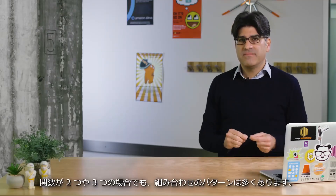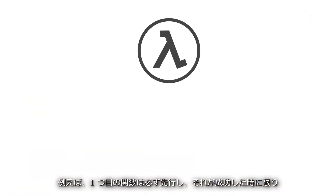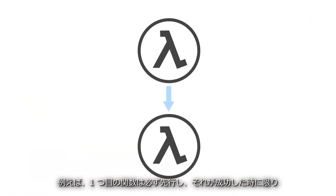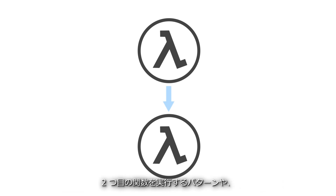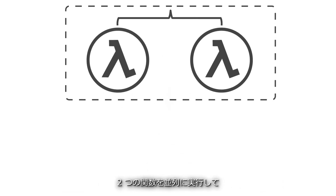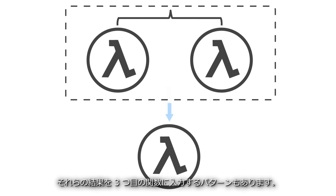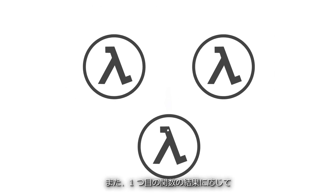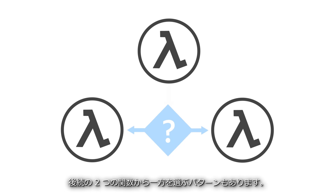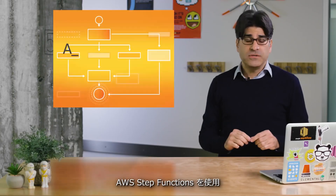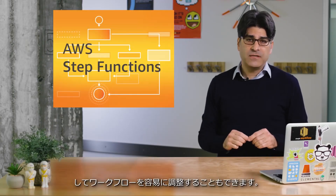There are many combinations and patterns of two or three functions. For example, you may want a second function to always follow a first and only run if and when the first succeeds. You may want to execute two functions in parallel and feed the combined results into a third. Or maybe you would like to choose between two functions based on the output of a first function. You could write a lot of code to choreograph the interaction of your microservices, or you could use AWS Step Functions to coordinate your workflows.